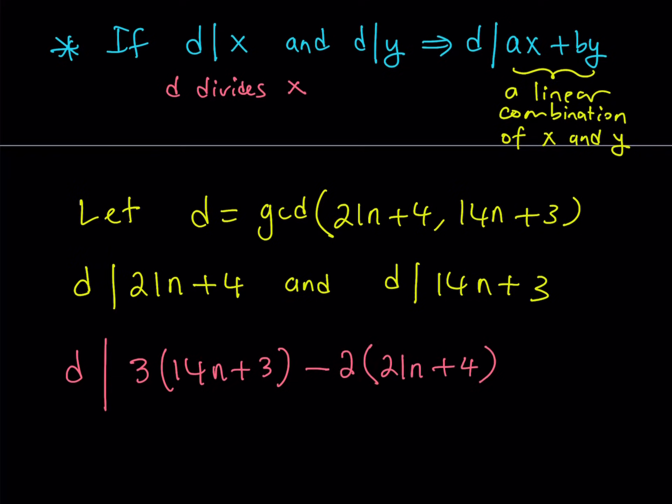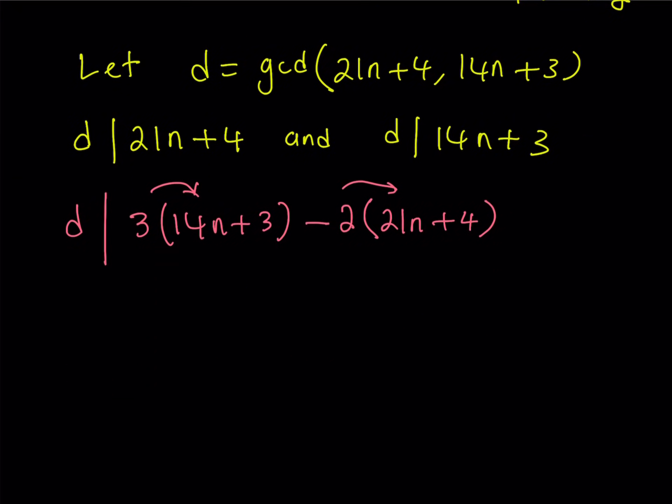Now what is so significant about choosing those numbers, three and negative two, is that if you take a look at it carefully, from here you're going to be getting 42n, and from here you're going to be getting negative 42n. So here the goal is to get rid of n. Make sense? Great. So let's go ahead and proceed.